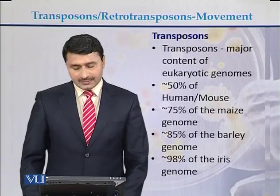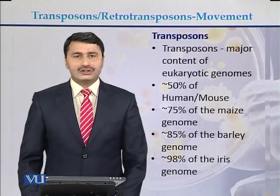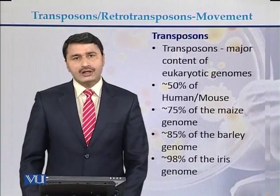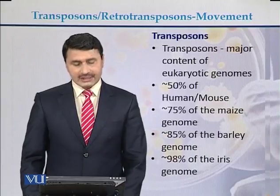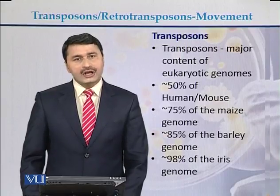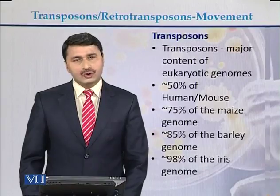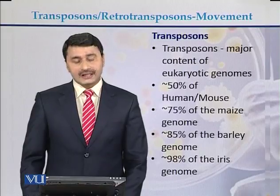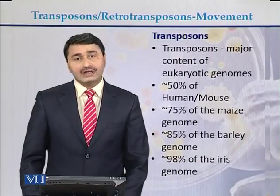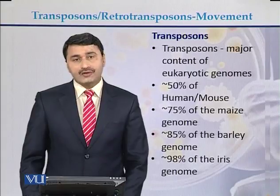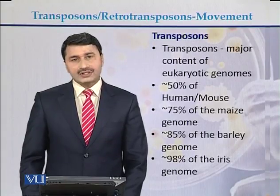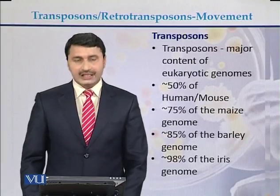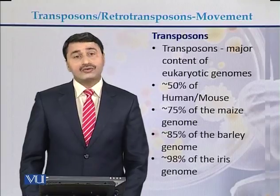Transposons are major components of the eukaryotic genome and are present in almost all eukaryotic genomes. Approximately 50% of the human and mouse genome consists of transposable elements. In the case of maize, approximately 75% of the genome consists of transposable elements, 85% of the barley genome, and up to 98% of the Eris genome consists of transposons.